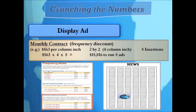The monthly frequency schedule has three options. Choosing the minimum of two insertions per week, it states we must run for a minimum of four consecutive weeks — that's four weeks times two insertions per week, so eight ads total. Running a two-by-two four column inch ad each time: $563 times four column inches times eight insertions. With this monthly contract we're looking at paying $18,016 to run eight ads.